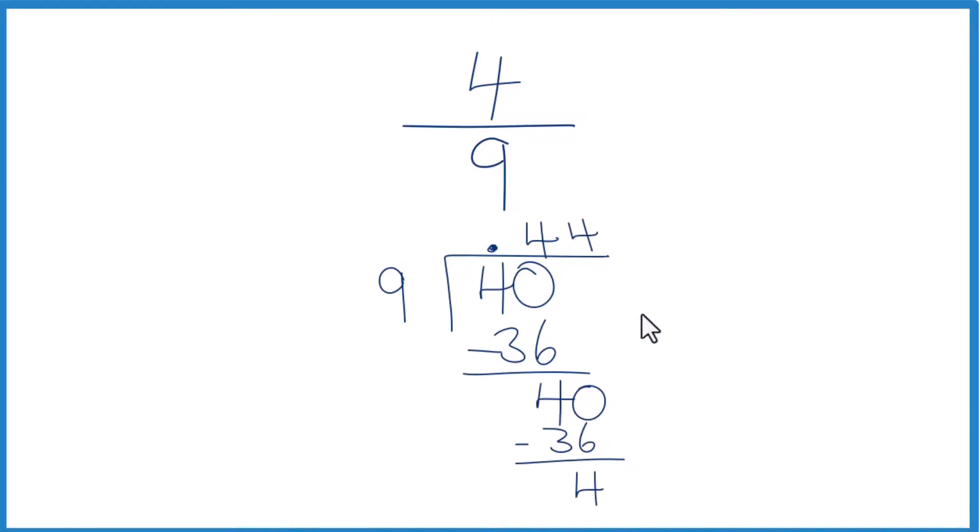And we'll keep getting 4 each time. This is just going to go at .4444 and so on. We can write this as 4 ninths. The fraction equals a decimal 0.4444 with the 4s repeating, or we can just put a bar over this 4 here to show that it just keeps repeating.